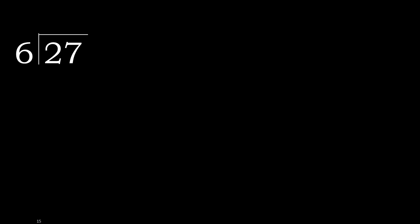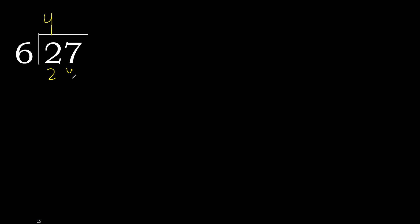27 divided by 6. 2 is less, therefore next. 27 is not less, therefore with 27. 6 multiplied by which number is nearest to 27 but not greater? 6 multiplied by 5 is 30 — 30 is greater. Multiplied by 4 is 24, which is not greater.